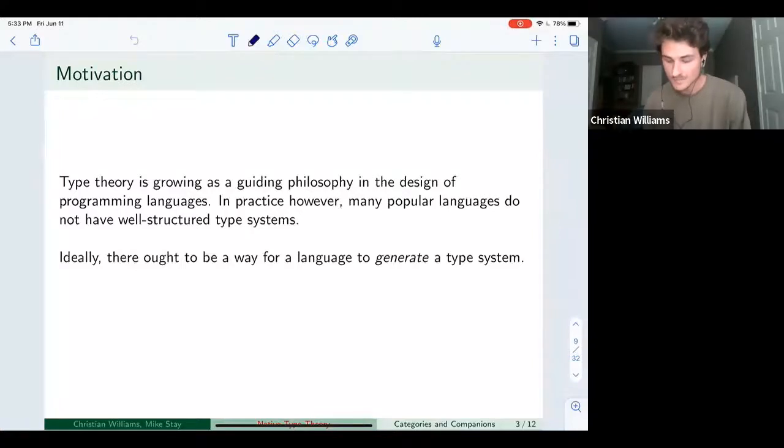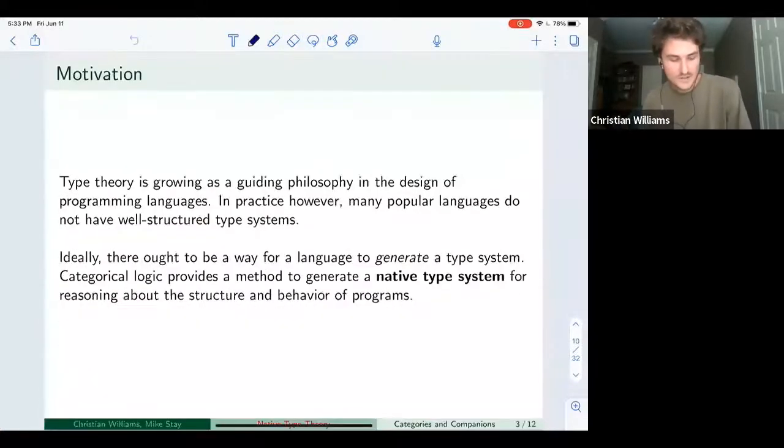So ideally, there ought to be a way for a language to generate a type system in a systematic, methodical way. And the idea is that categorical logic provides a method to generate a native type system of any language for reasoning about the structure and behavior of programs. And the hope is that this could provide a unified framework of reasoning for a broad class of programming languages.